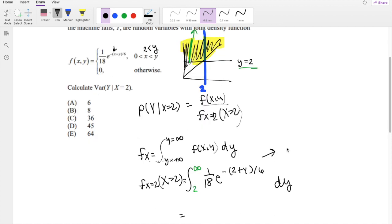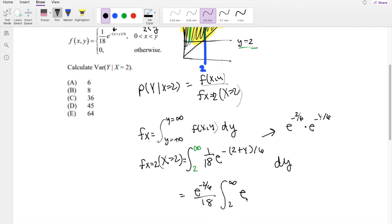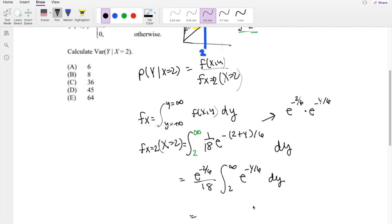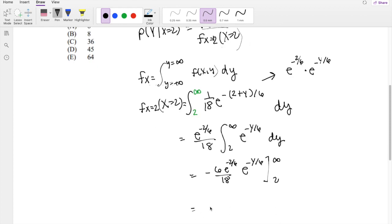For me, it's always easiest to think of this exponent as e^(-2/6) times e^(-y/6), because this way you can see that e^(-2/6) is just a constant, so we can throw that out, as well as the 1/18. Now we're just integrating 2 to infinity of e^(-y/6) dy. Well, that's just a pretty simple integral. e^(-y/6) stays the same, and we have to multiply this side by negative 6. That constant just stays the same, integrating from 2 to infinity.